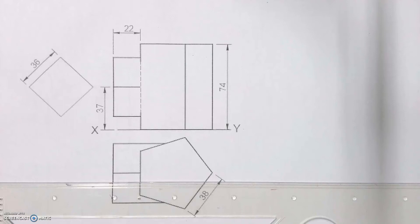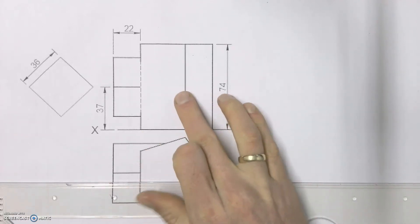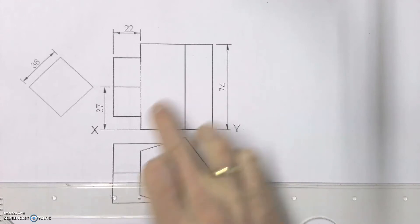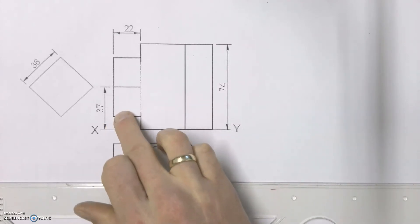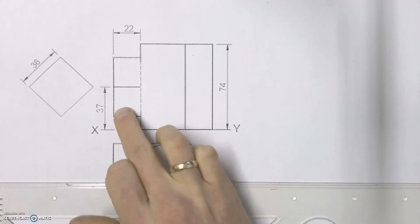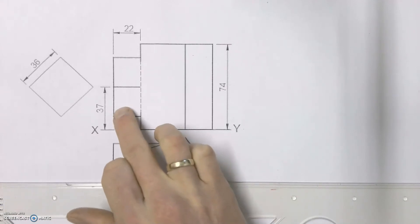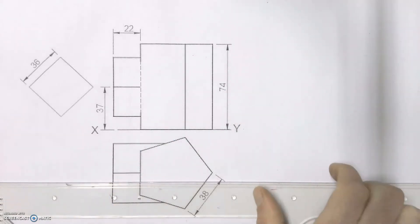In this video we're going to find the interpenetration curve between this main pipe and the secondary pipe, and then once we've done finding that curve we're also going to develop the secondary pipe, which we're going to draw out on the side over here.